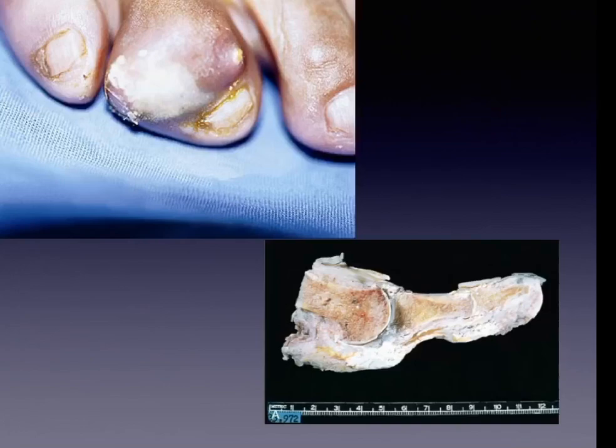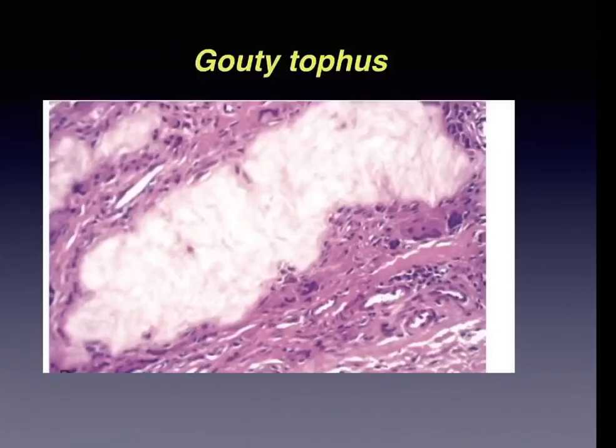The lower picture shows an amputated great toe with white tophi involving the joint and soft tissues. The histological appearance of a gouty tophus shows an aggregate of dissolved urate crystals in the center surrounded by reactive fibroblasts, mononuclear inflammatory cells, and giant cells. Under polarized light, urate crystals appear needle-shaped and negatively birefringent.